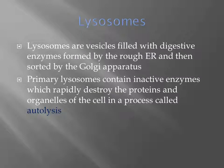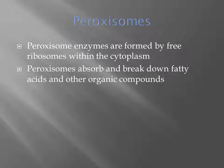Lysosomes are vesicles filled with digestive enzymes, formed by the rough endoplasmic reticulum and sorted by the Golgi apparatus. Primary lysosomes contain inactive enzymes that can rapidly destroy the proteins and organelles of the cell in a process called autolysis. Peroxisomes are formed by free ribosomes within the cytoplasm and absorb and break down fatty acids and other organic compounds.